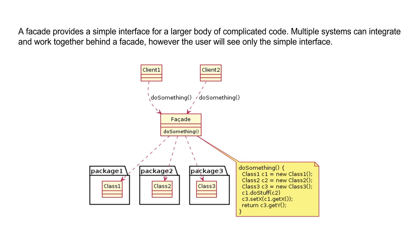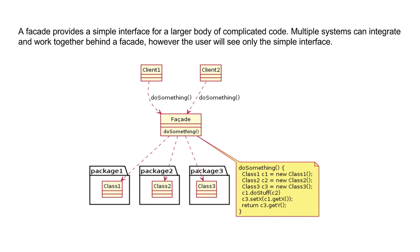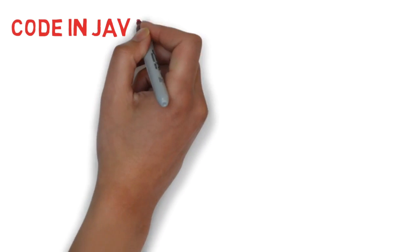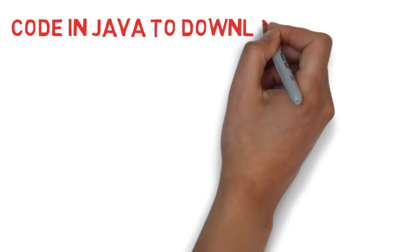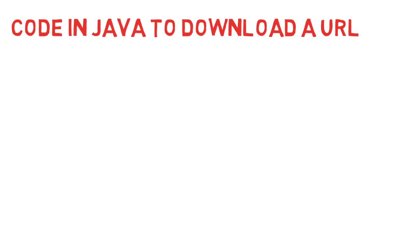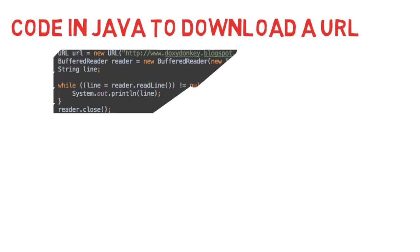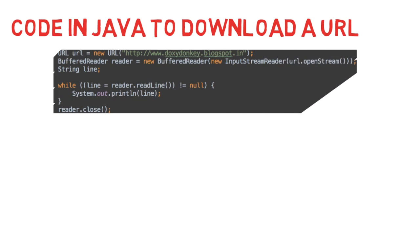Let's see the facade pattern in action in a real Java library. Let's look at the code needed in Java to download the contents of a URL. The code on screen is pretty simple and straightforward — you have a URL, pass it to a BufferedReader as an input stream, and then read through it line by line. It's almost understandable in plain English.